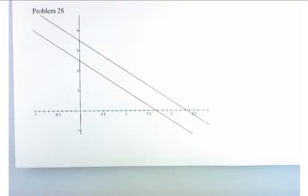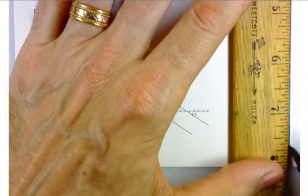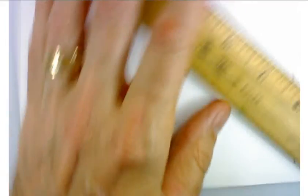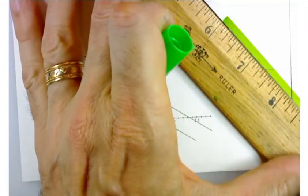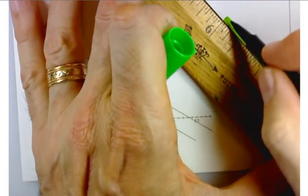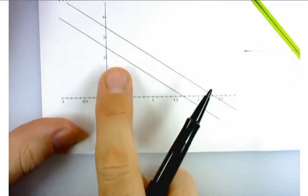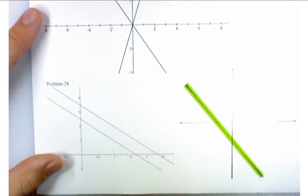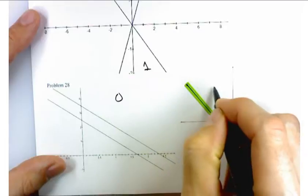Now there's one last possibility here. So the last possibility, in terms of what can happen when you're graphing a system of equations, is you have two lines. And those two lines are one right on top of the other. In which case, instead of no solutions, you have an infinite number of solutions. So there's really three possibilities. One, none, or infinitely many solutions.